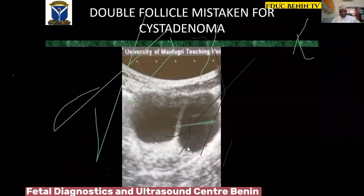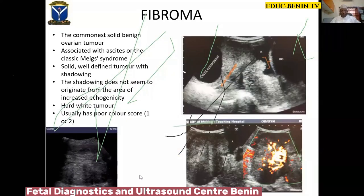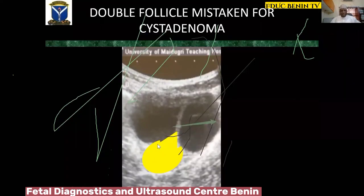When I reviewed a misdiagnosed image, I realized it looked more like a lambda sign — two follicles with an echogenic area at the tip of the arrow. This looks more like twin follicles than a double follicle. When you see this lambda sign, be sure this is not a septate cystadenoma. I mistook this for a cystadenoma; in actual fact it was a double follicle. Just remember the lambda sign.